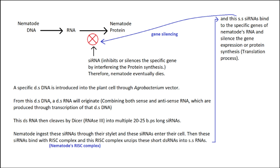We know the central dogma of molecular biology, where protein is produced from its specific single-stranded mRNA by the translation mechanism, and mRNA is produced from DNA by the transcription mechanism. So in this case, if we target the translation process of the nematode, it will eventually die due to scarcity of protein. This mechanism will be carried out by the siRNA molecule, which is a part of RNAi.